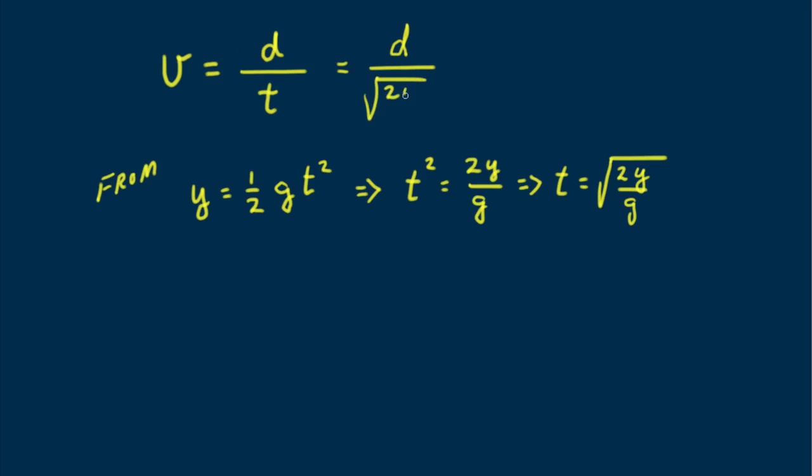So, substituting, we find our answer is v equals d over the square root of 2y over g. Yum.